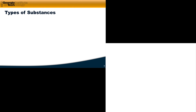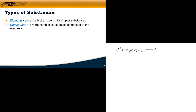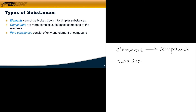Before answering this question, let's talk about what was known in Avogadro's time about how chemical substances behaved. There were different types of substances. The simplest type is known as elements — substances that could not be broken down into simpler components. It was also known that elements can be converted into more complex substances known as compounds. Pure substances consist of only one element or compound, and we can contrast these with mixtures, which contain multiple pure substances.